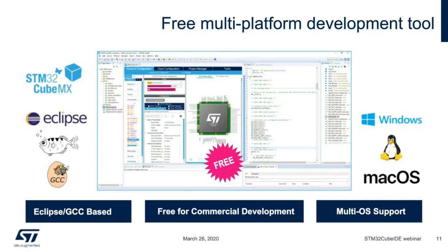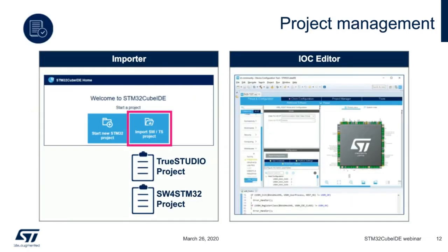STM32 CubeIDE runs on Windows, macOS, and Linux, is based on the Eclipse platform, and features a GCC compiler with ST enhancements. The tool is completely free of charge for personal and commercial usage. In the screenshot, the left side shows the project tree, the middle part shows the built-in CubeMX for configuration and code generation, and the third window shows the actual C code. Projects from Atollic TrueSTUDIO or SW4STM32 can be seamlessly migrated to STM32 CubeIDE.